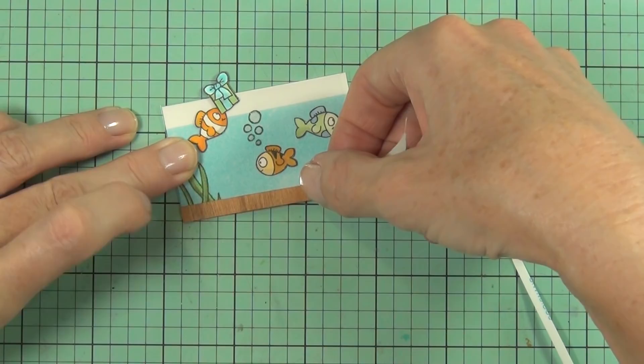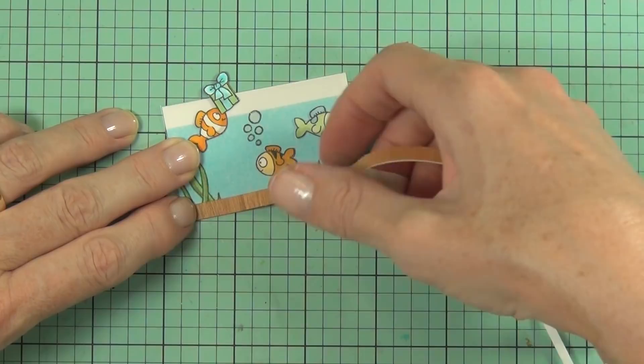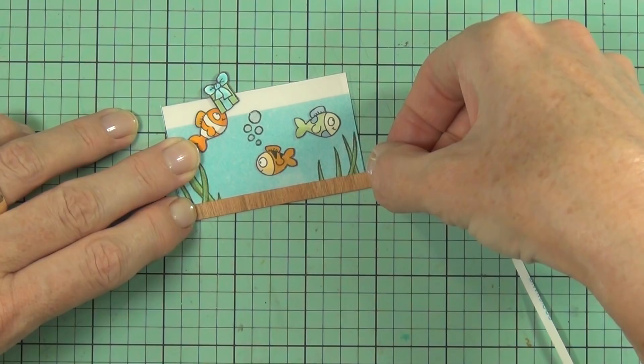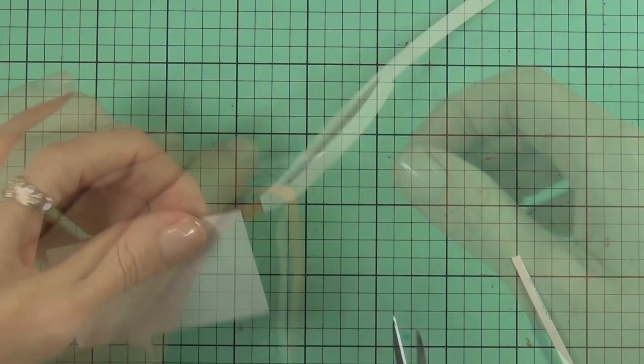And then I've got some tape behind a piece of bark—this is some cherry wood I think it is—and I've just cut a really thin piece of that to make the base of my fish tank. And I use the same cardstock, or the bark cardstock, to cut some legs for my fish tank.